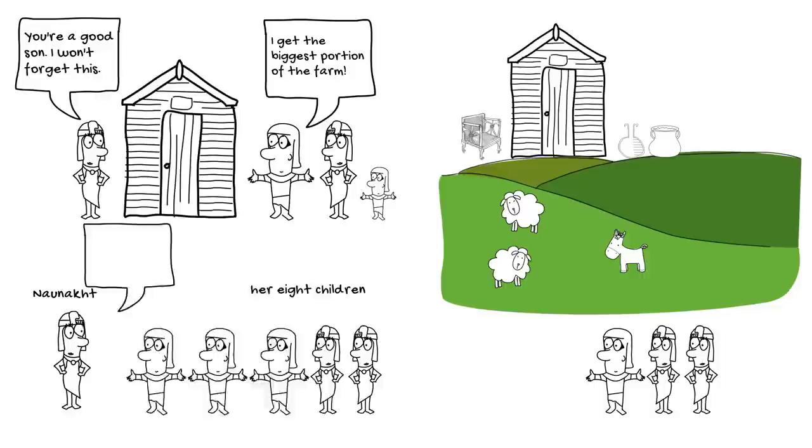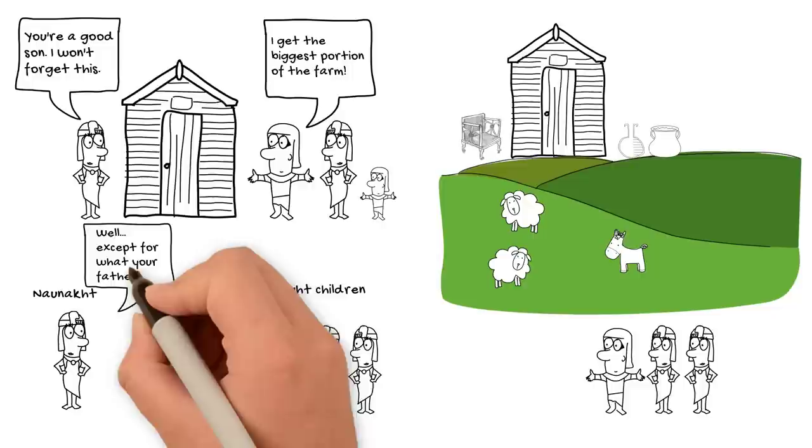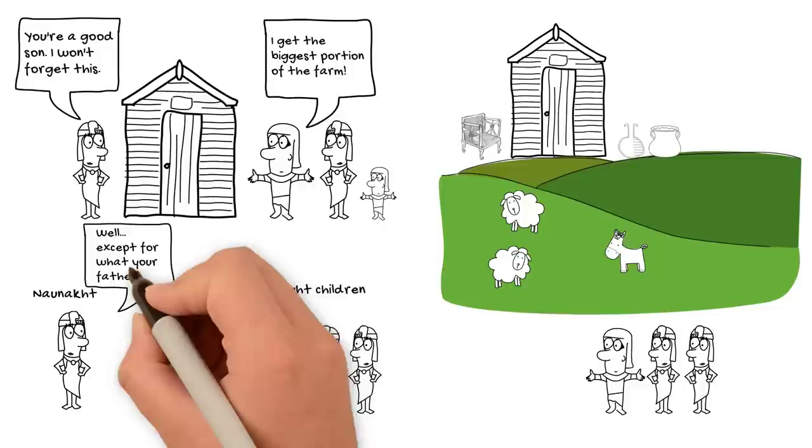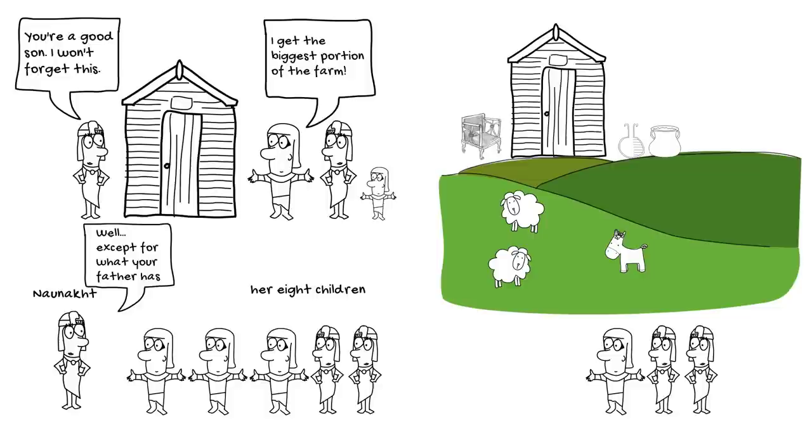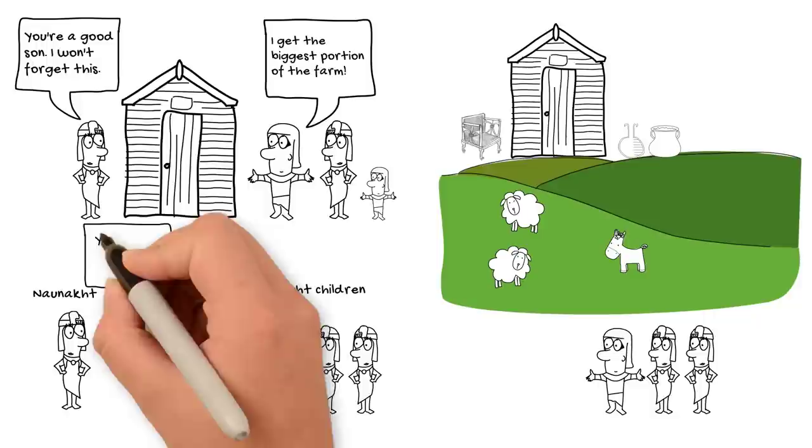However, the document also specifies that the children could still inherit from their father even though Nao Noct had disinherited some of them. Thus, in addition to highlighting the importance of care for elderly parents, this document also shows how women could own property and even when married retain the right to do as they pleased with their own property that they had brought into the marriage.